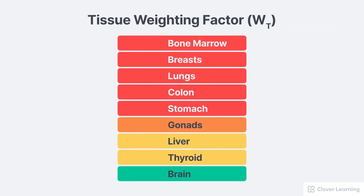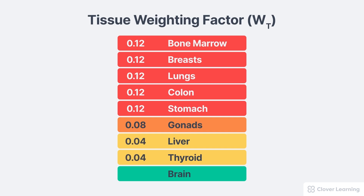Most tissues in the body have been assigned a tissue weighting factor, or WT, that corresponds to their relative radiosensitivity. Bone marrow, breast, lungs, colon, and stomach all have a tissue weighting factor of 0.12. The gonads have a tissue weighting factor of 0.08. The liver and thyroid have a tissue weighting factor of 0.04, and the brain has a tissue weighting factor of just 0.01. Please be aware that these numbers can vary based on the publication or organization being referenced. These values come from the most recent values published by the International Commission on Radiological Protection.